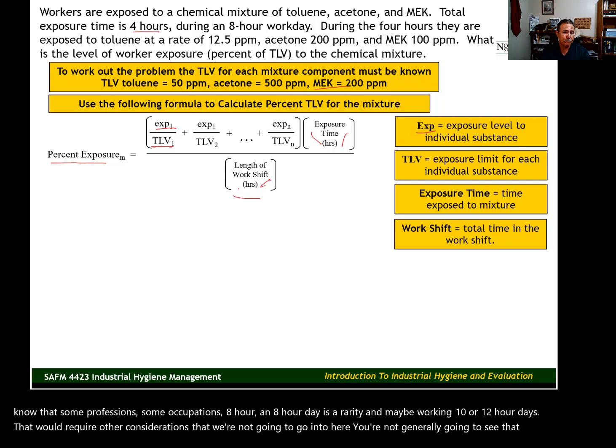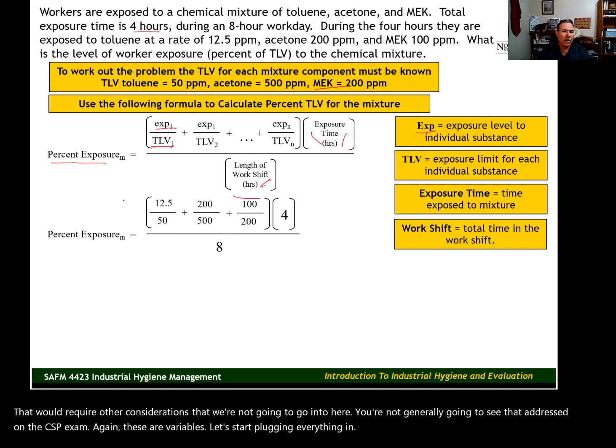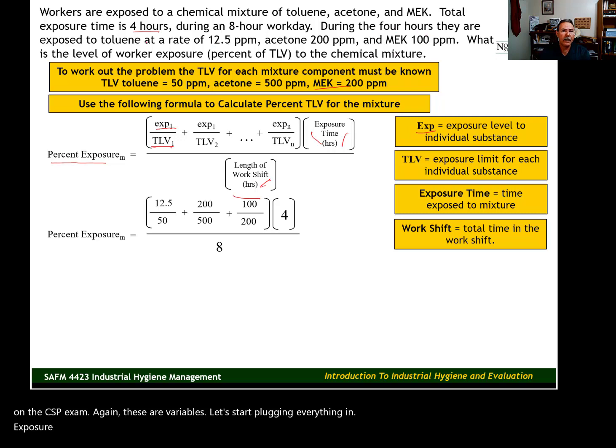Let's start plugging everything in. Exposure 1—that is toluene, 12.5 parts per million. Then the TLV for toluene is 50 parts per million. Our second substance is acetone. The exposure is 200 parts per million, and the TLV is 500 parts per million. Our last substance in this example is MEK. The exposure level is 100, and the TLV is 200.